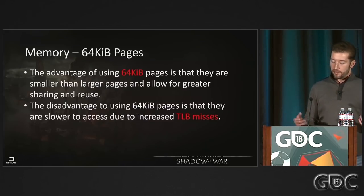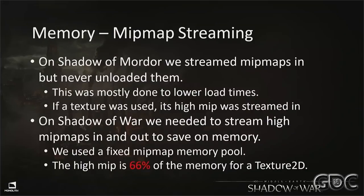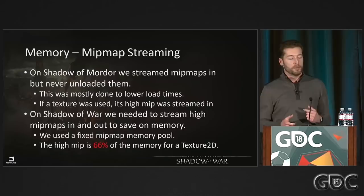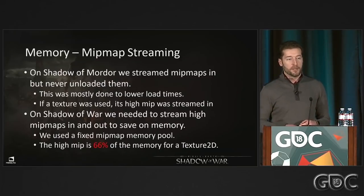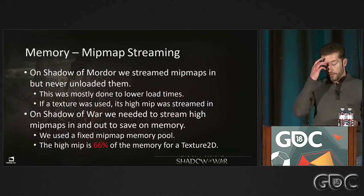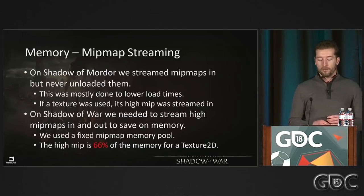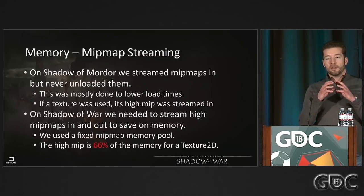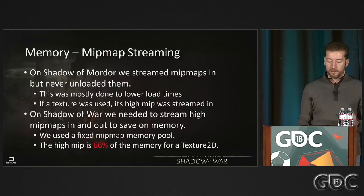We use 64K pages for these virtual memory tricks — that's why we have that 1GB 64K block. It's much easier to find opportunities to share a 64K page than a 2MB page. Also, waste from partially-used pages is smaller with 64K. The downside is they're slower. The first application was MipMap streaming. In Shadow of Mordor we streamed mips in but never unloaded them — we had 5GB on the new consoles and load time was the only concern. On Shadow of War, running out of memory forced us to move mips in and out dynamically.